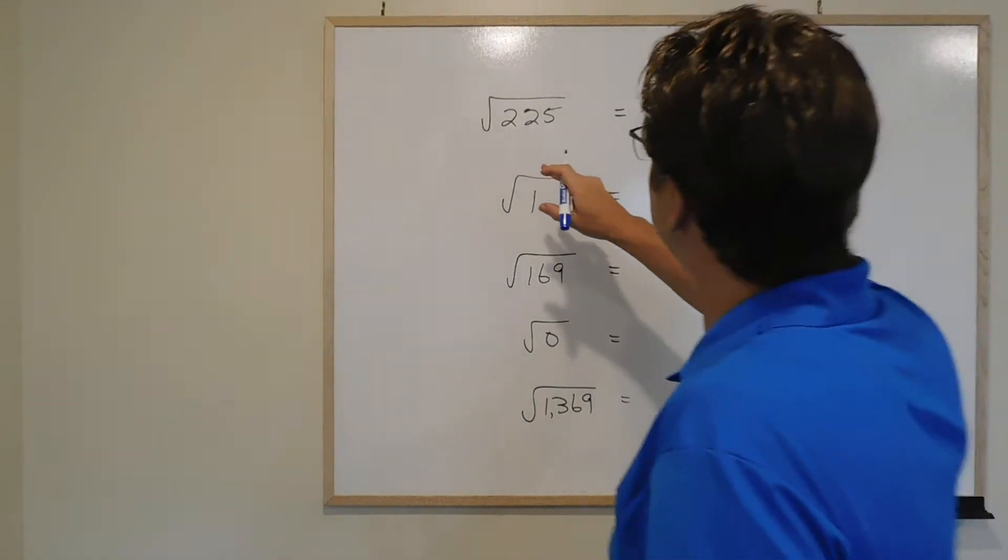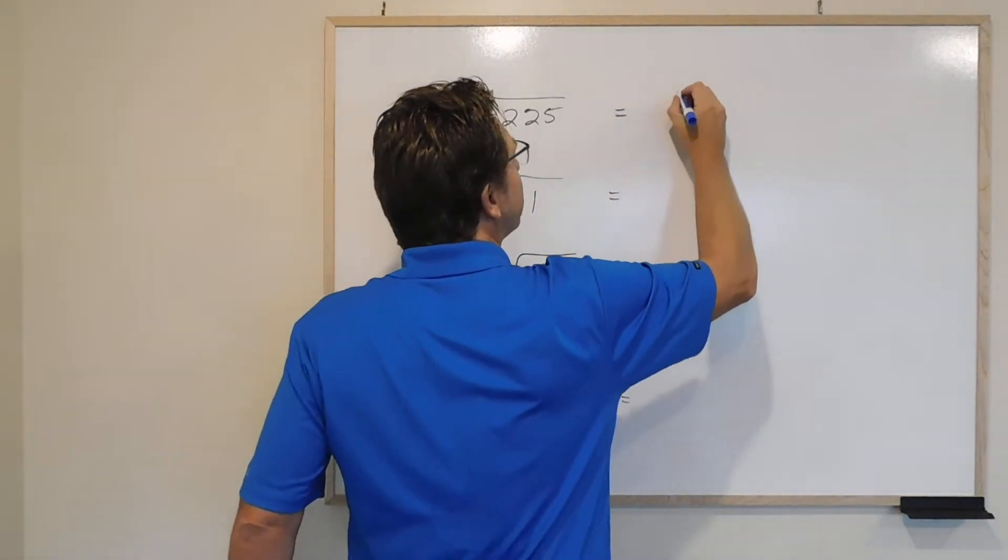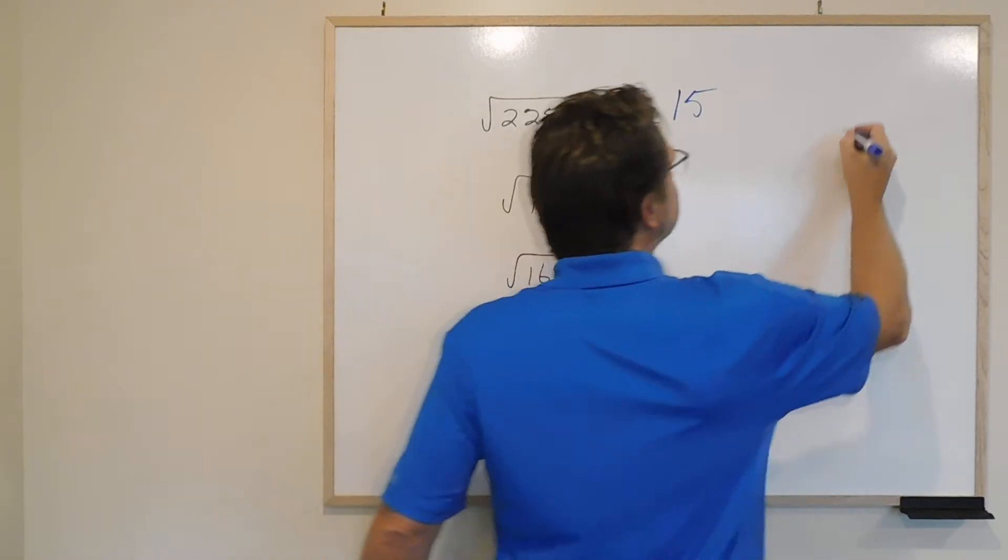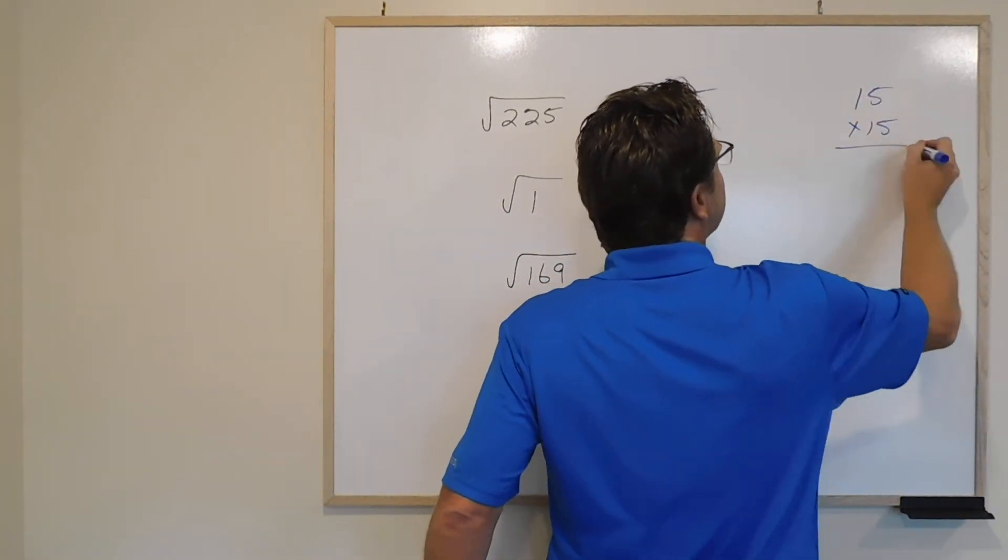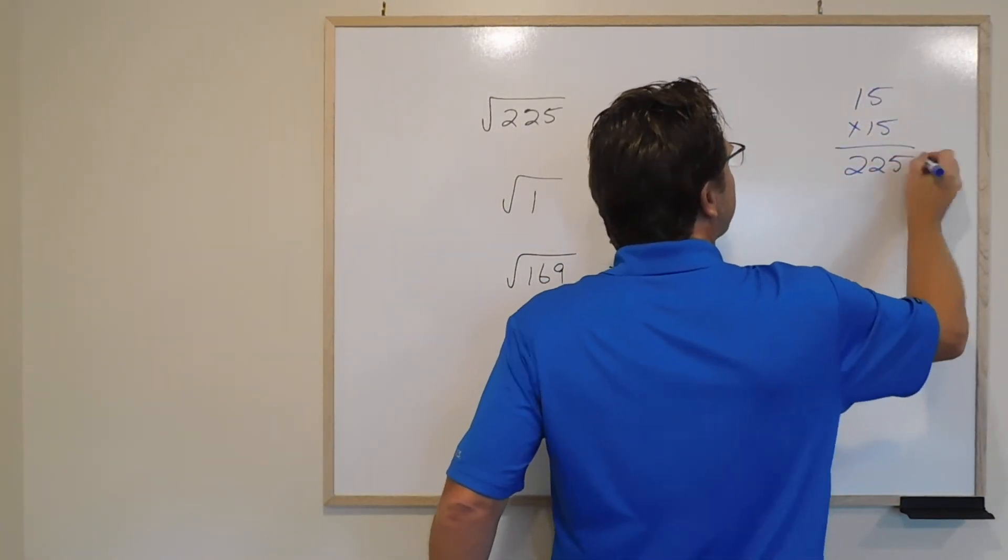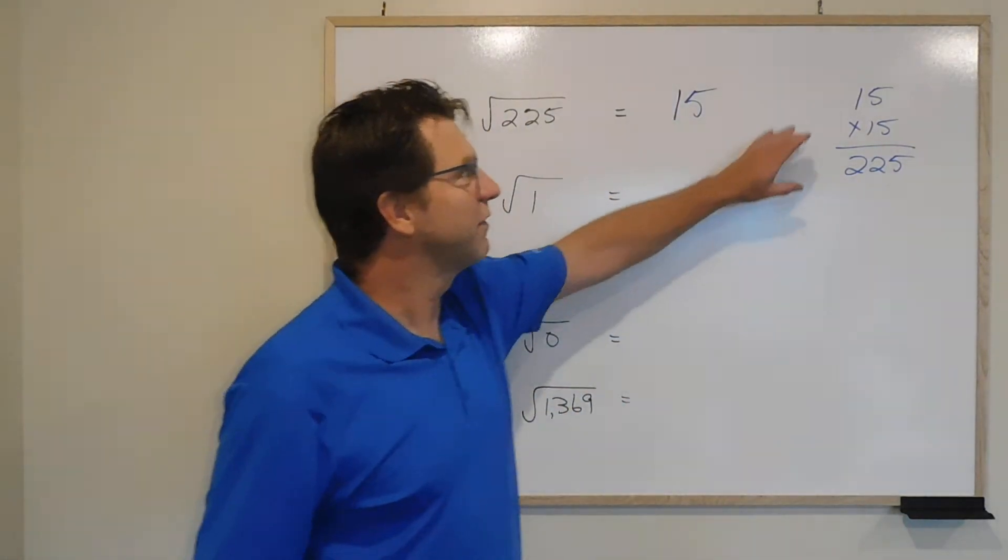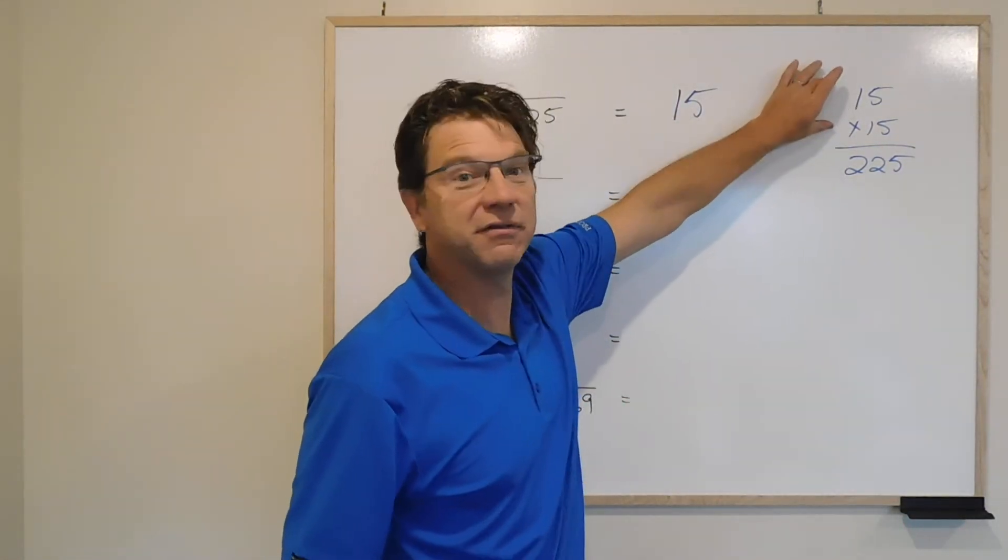So the square root of 225 is 15. Because 15 times 15 equals 225, therefore the square root of 225 is 15.